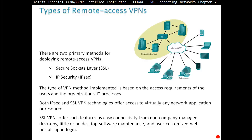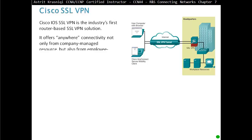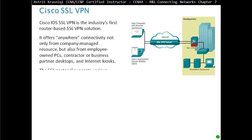It's a bit different from IPSec because with IP Security you do have to have a software application installed on the devices that want to access VPN. This SSL VPN is an industry-first router-based SSL VPN solution, offering anywhere connectivity — not only from company-managed resources, but also from employee-owned PCs, contractors, business-partner desktops, and internet kiosks. You don't have to manage the computer or install any application; all they have to do is access the web browser.